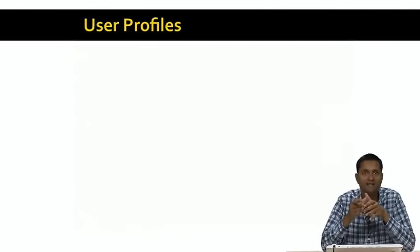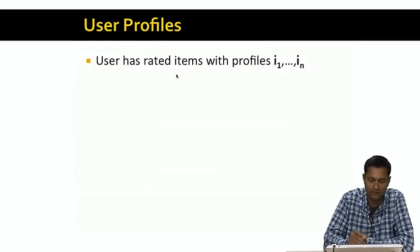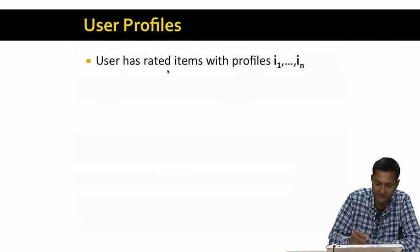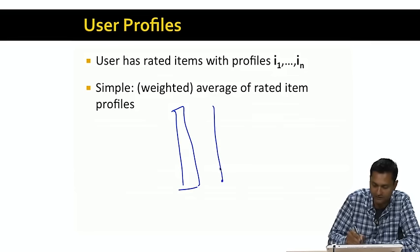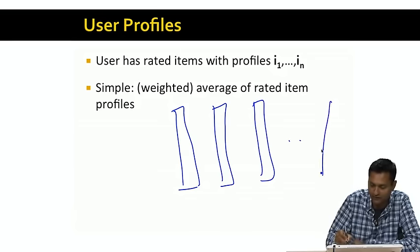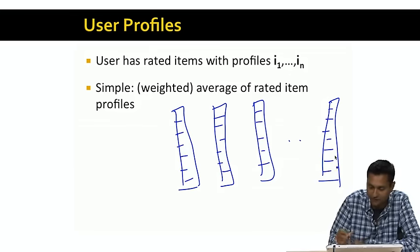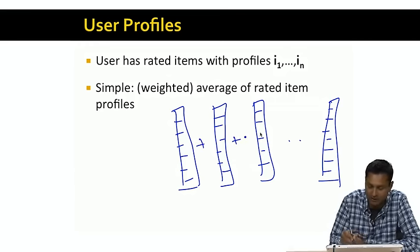Now that we have item profiles, our next task is to construct user profiles. Let's say we have a user who has rated items with profiles i1 through iN. Remember, i1 through iN are vectors of entries — each is a vector in a high-dimensional space with many entries.